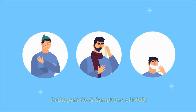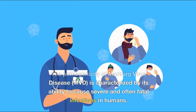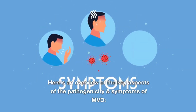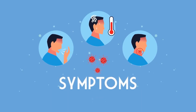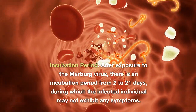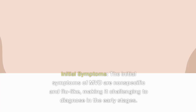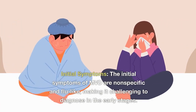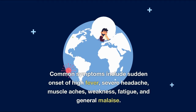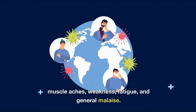Pathogenicity and symptoms of MVD: the pathogenicity of Marburg virus disease is characterized by its ability to cause severe and often fatal infections in humans. After exposure, there is an incubation period of 2 to 21 days during which the infected individual may not exhibit any symptoms. The initial symptoms are nonspecific and flu-like, making early diagnosis challenging, and include sudden onset of high fever, severe headache, muscle aches, weakness, fatigue, and general malaise.